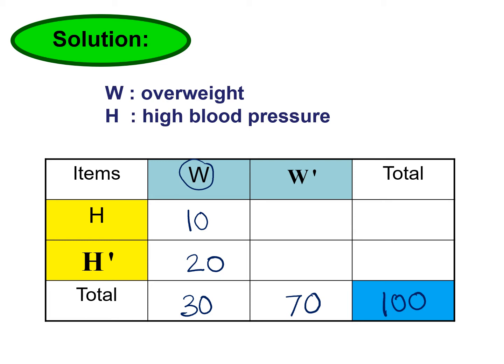Only 4 of the professors who were not overweight had high blood pressure, so the W prime intersect H cell is 4. So 10 plus 4 gives a total of 14 for high blood pressure. The total for not overweight is 70, so 70 minus 4 gives 66 for W prime intersect H prime. Summing 20 and 66 gives 86 for not high blood pressure total.